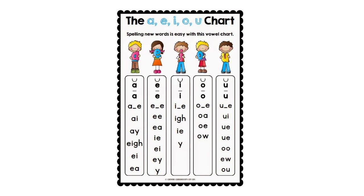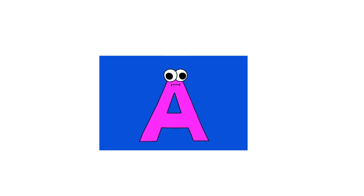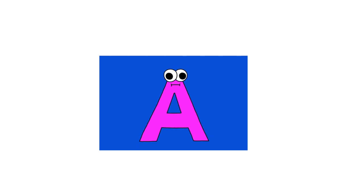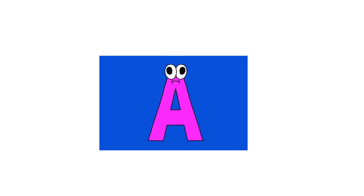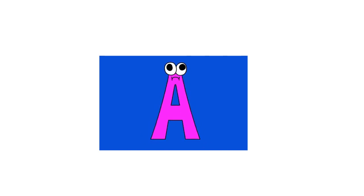We are also going to learn the short and long vowels and how to pronounce them. For example, this is letter A that makes the sound 'ah', which is a short vowel that makes the sound 'ah'.